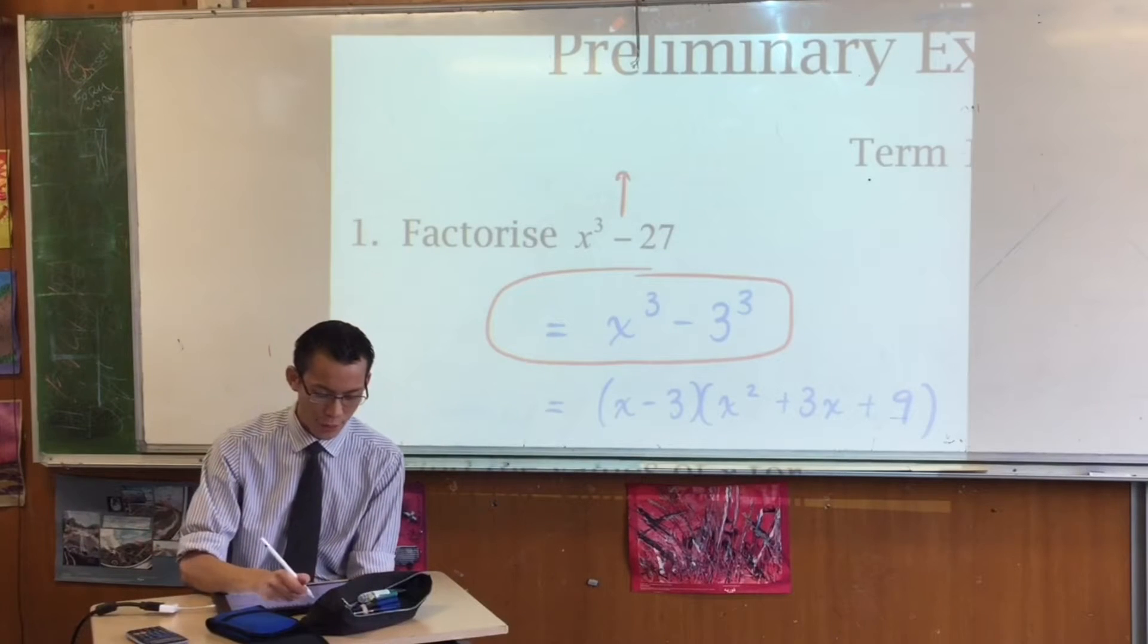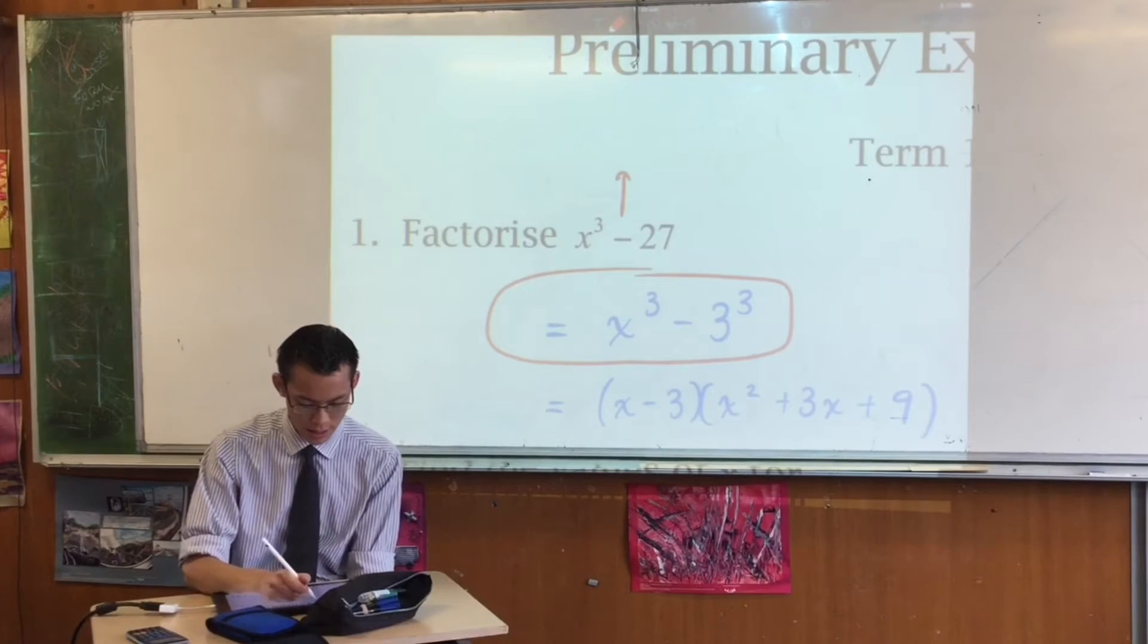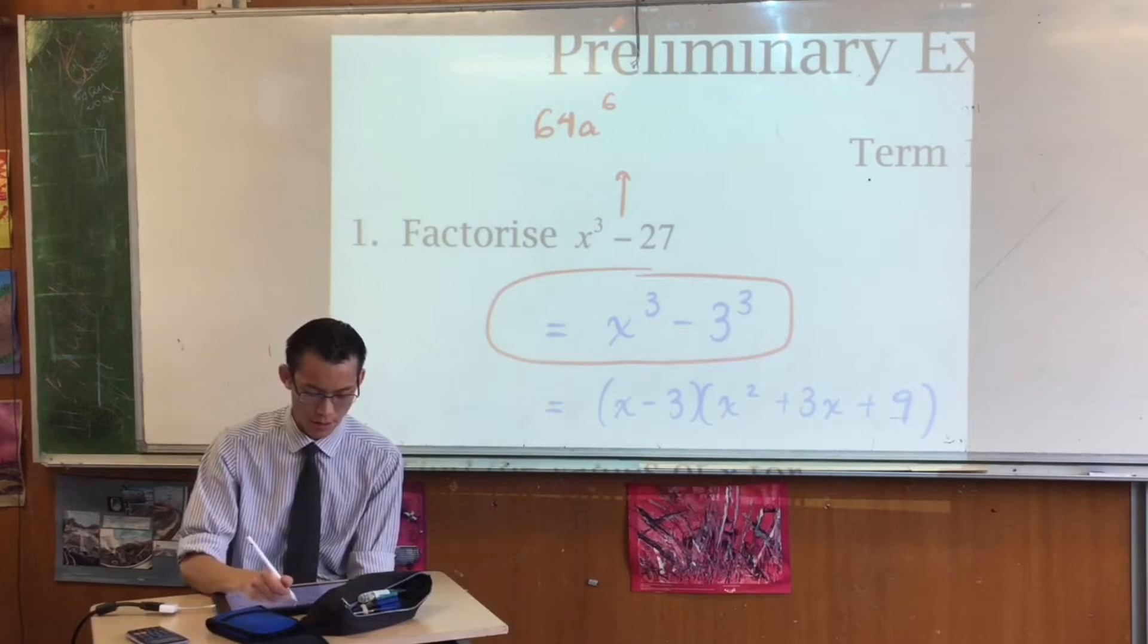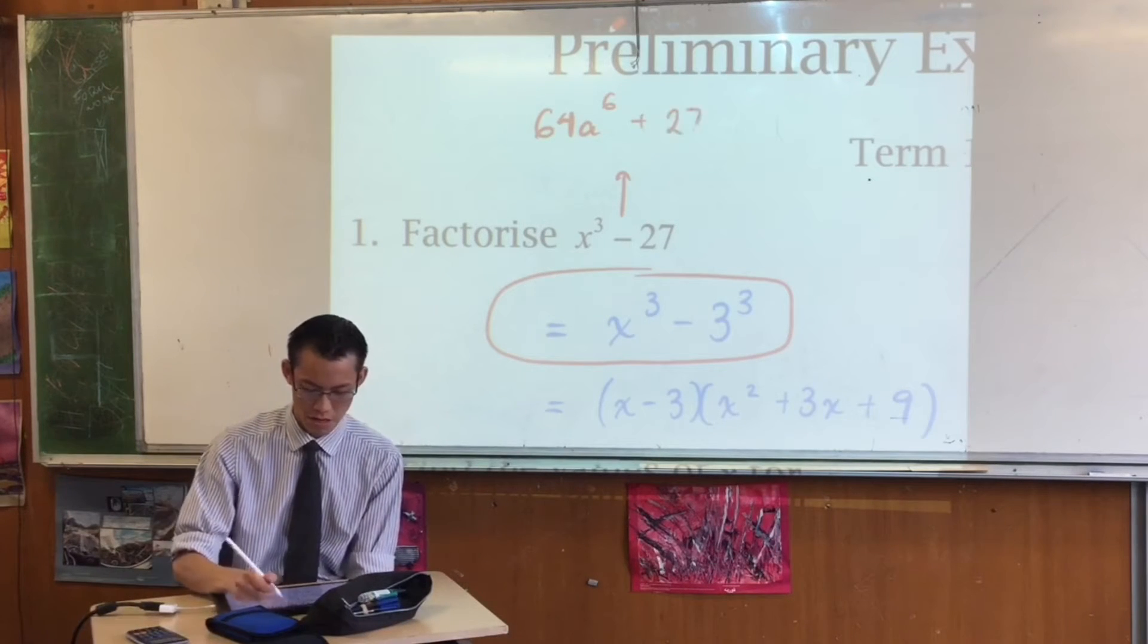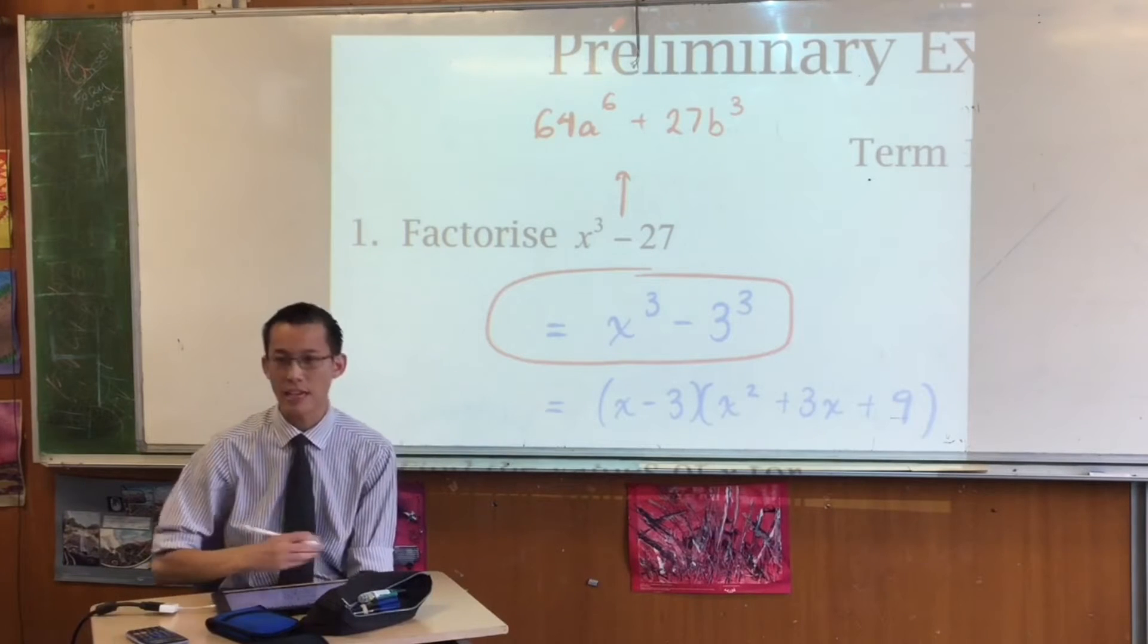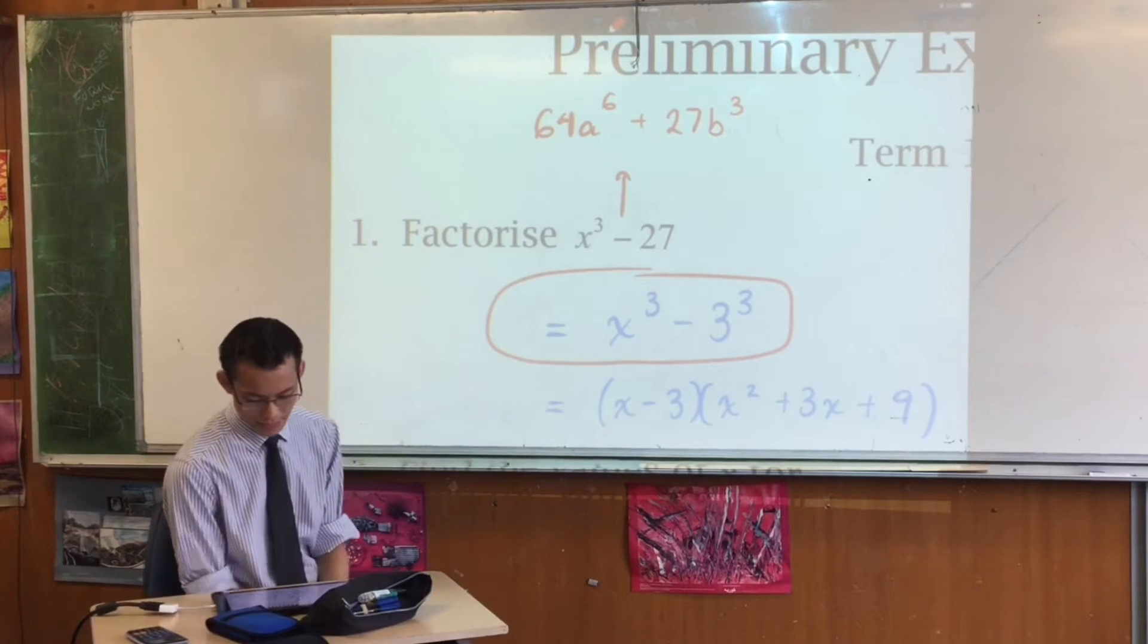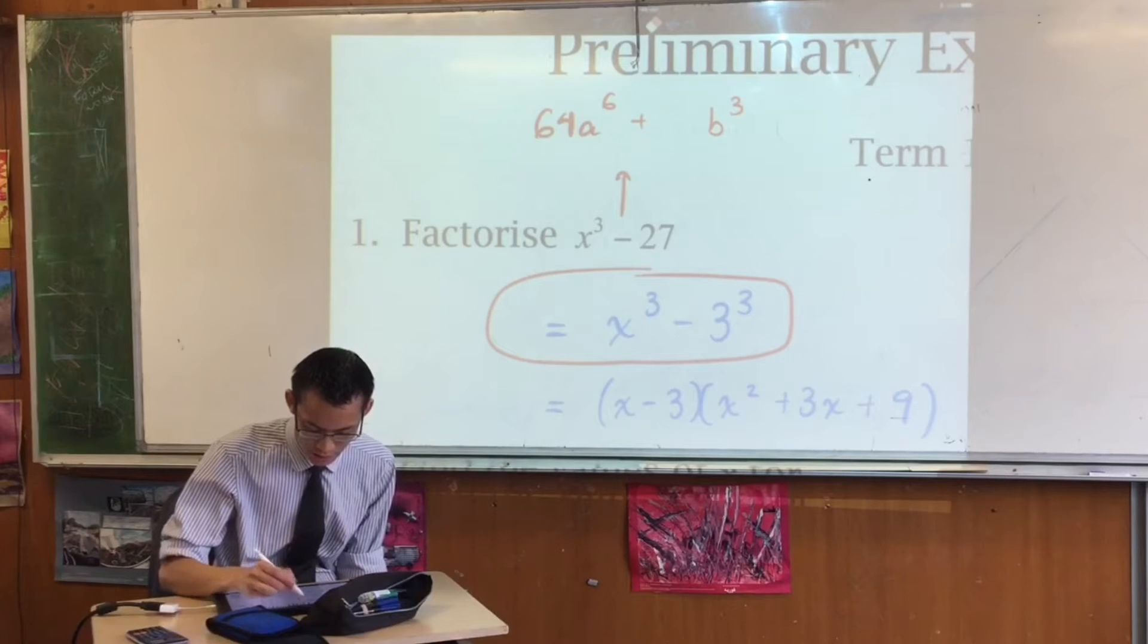However, sometimes you'll get something which is significantly messier. For instance, if you get something like, I don't know, here's an example. 64a^6 plus... Okay, so when you look at that... Actually, no, let me change that to a 9.